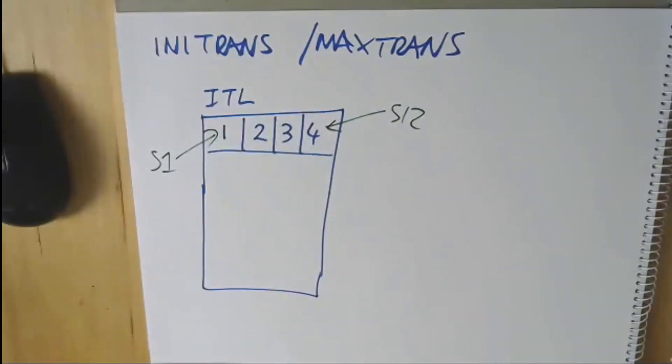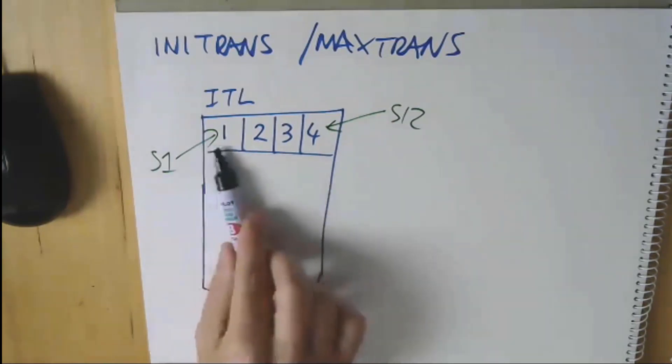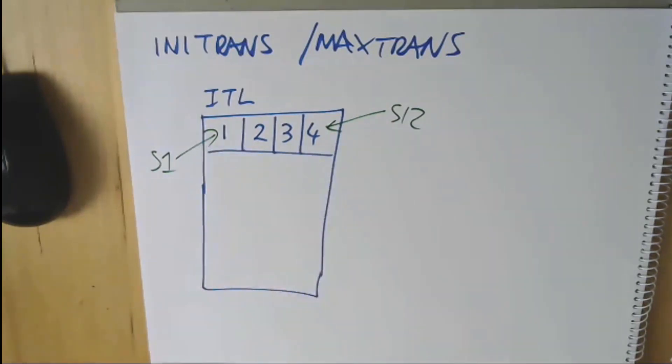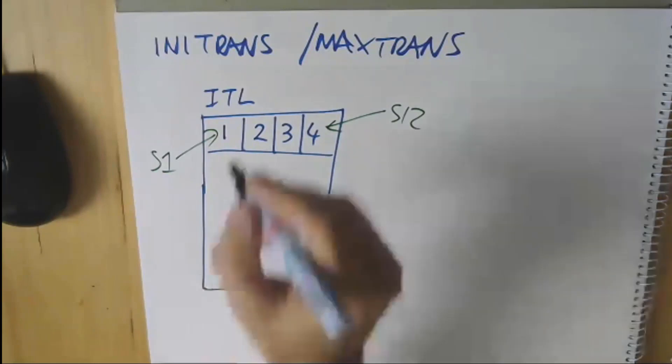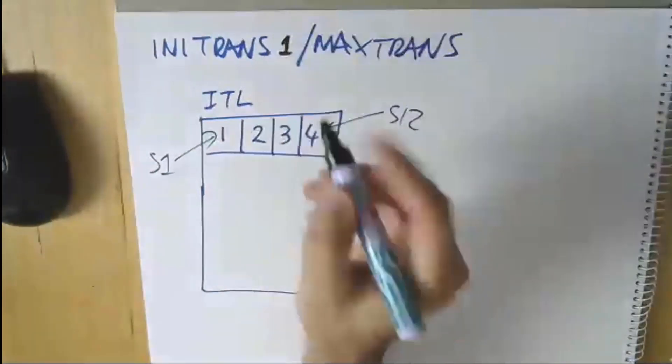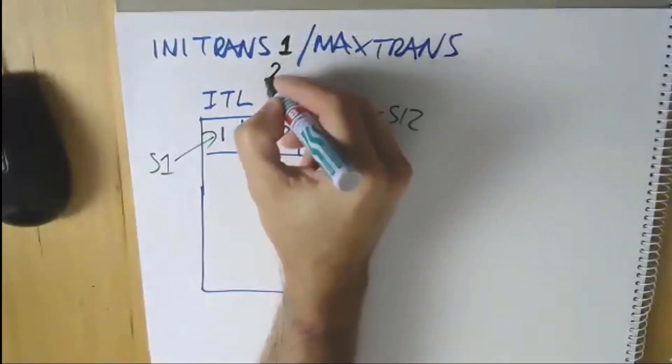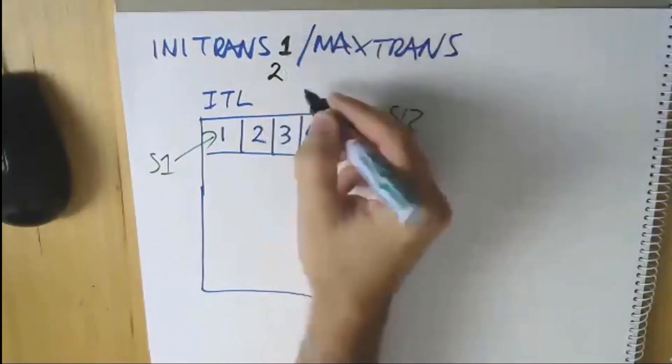Inside that block at a given point in time, once they commit they'll free up their transaction slot or interested transaction list, and therefore it becomes available for someone else. INITRANS was allocating how many of these you got when the block was created. In fact, when you allocated a new block for this particular table, how many slots do I want to reserve in advance? It used to default to one. I'm pretty sure now it defaults to two, even if you set it to one you get two in the block no matter what.